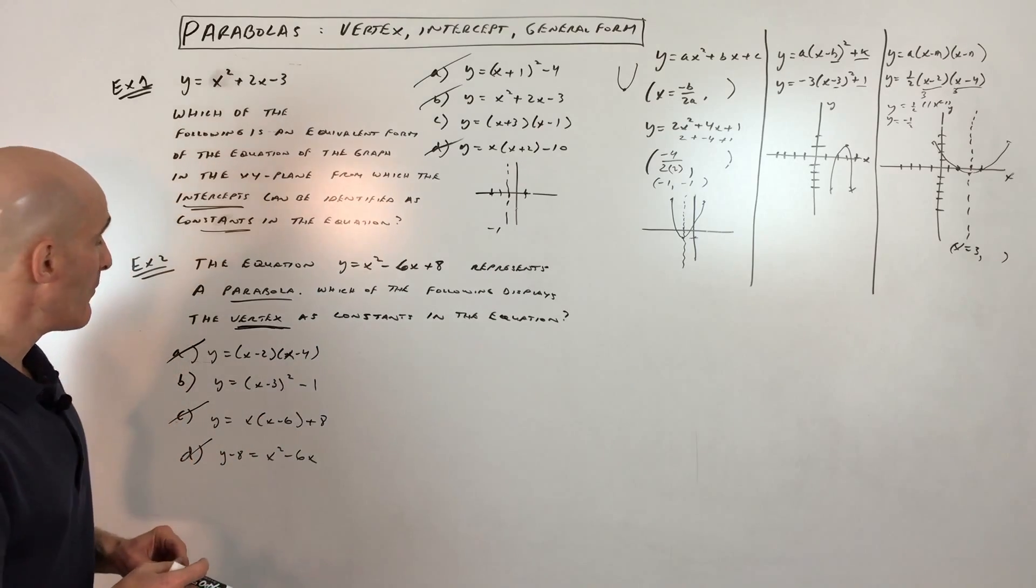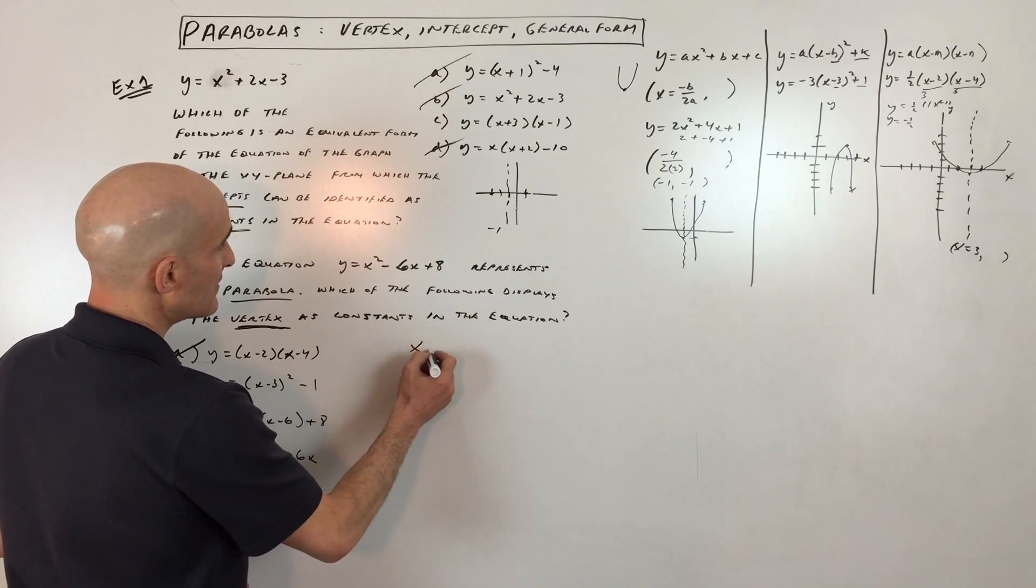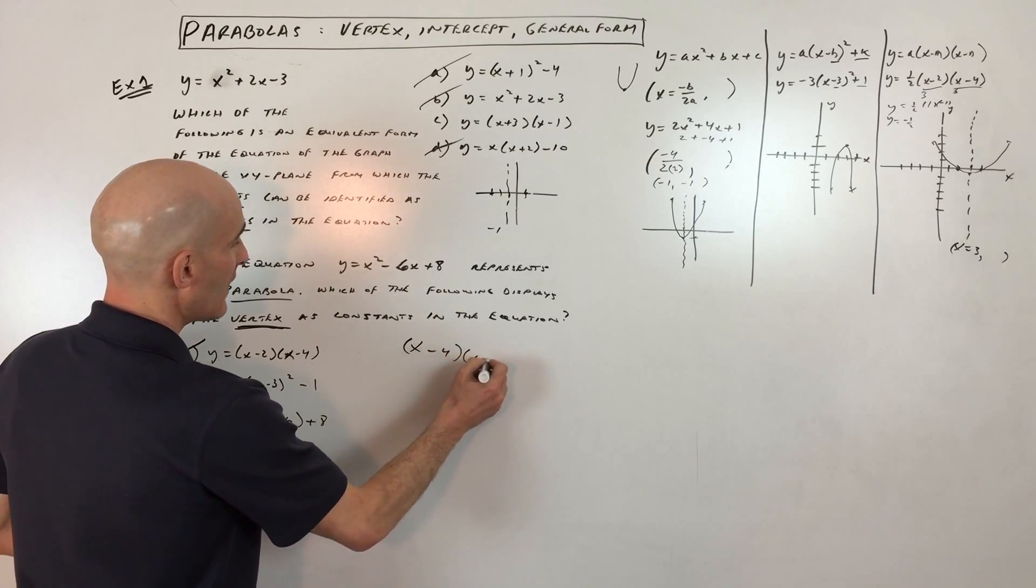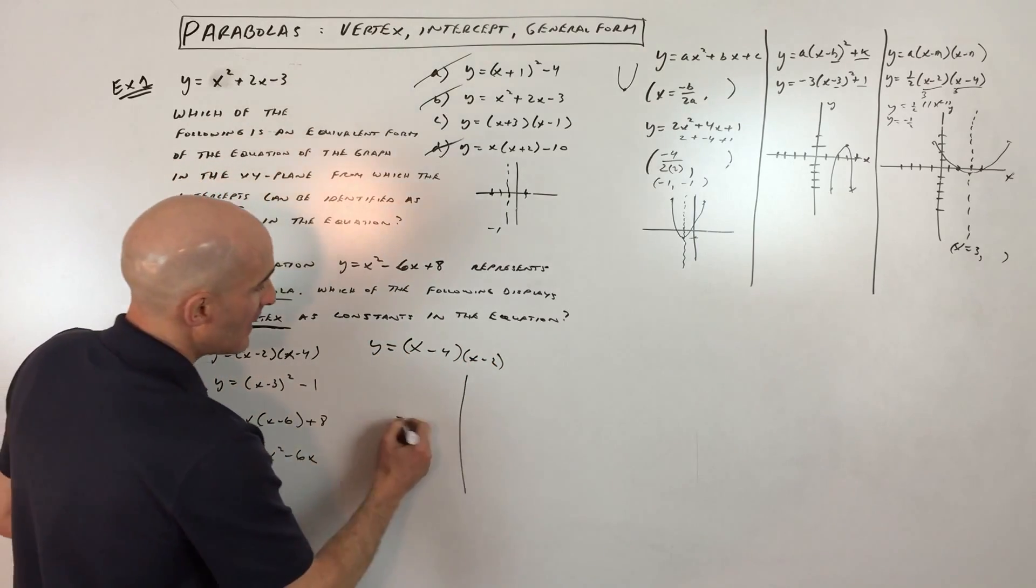One, you could go ahead and you could factor this. You could say this is x minus 4, x minus 2. So what I've done is I've written in the intercept form. And you could graph it.